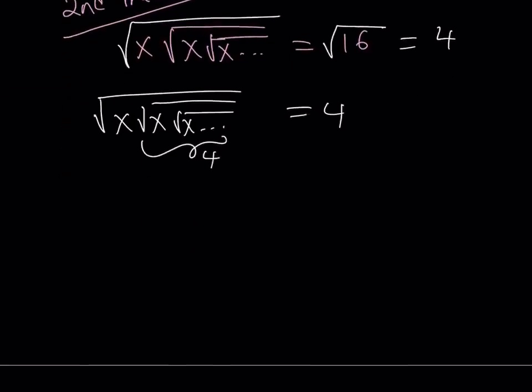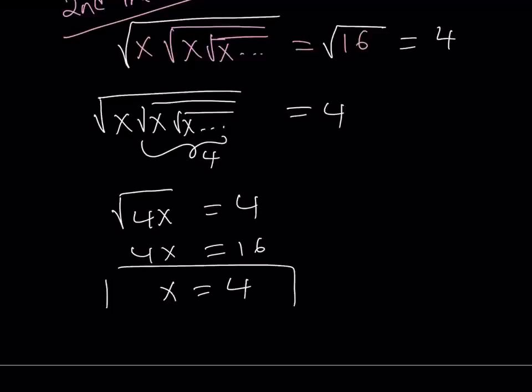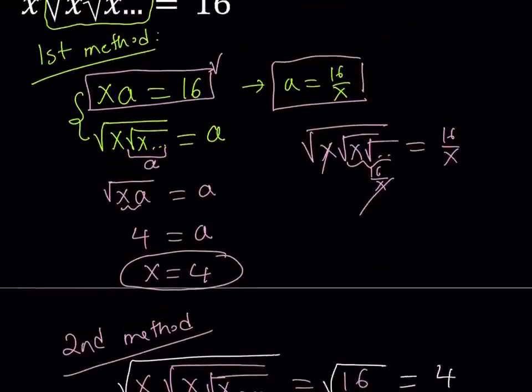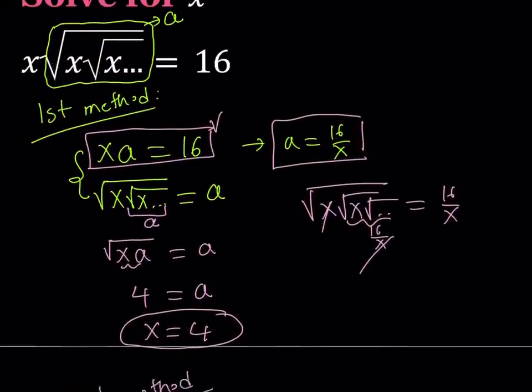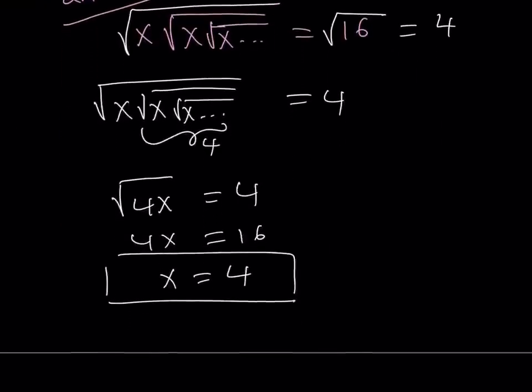That implies that this part here is also 4. And that implies that the square root of 4x is equal to 4. And that means 4x is equal to 16 if you square both sides. And that means x equals 4. And again, x is what we're looking for, right? So the answer is 4 again. Of course, we're supposed to get the same answer. But that's the first method. And this is the second method. I'm pretty sure you'll find other methods as well.